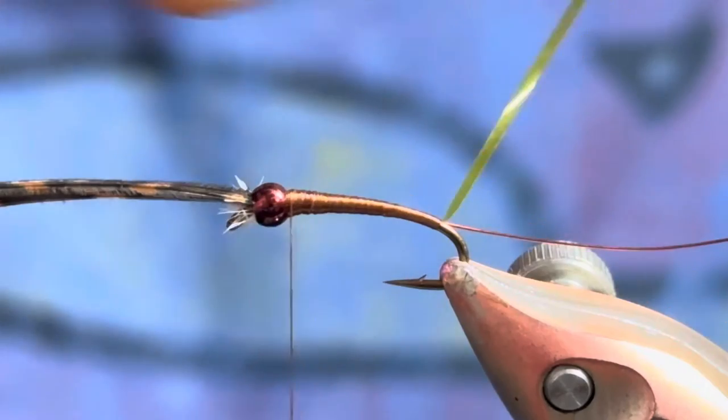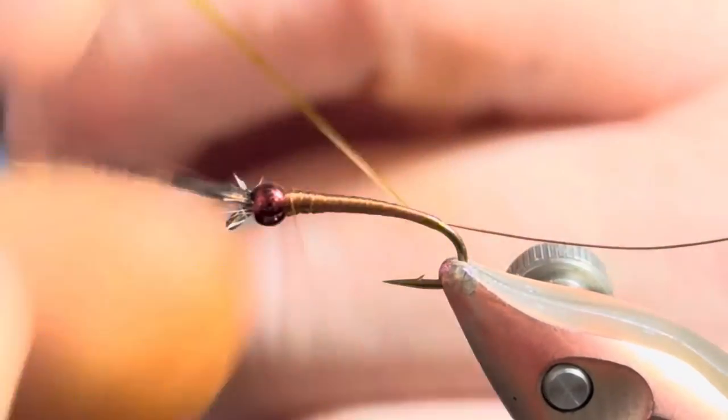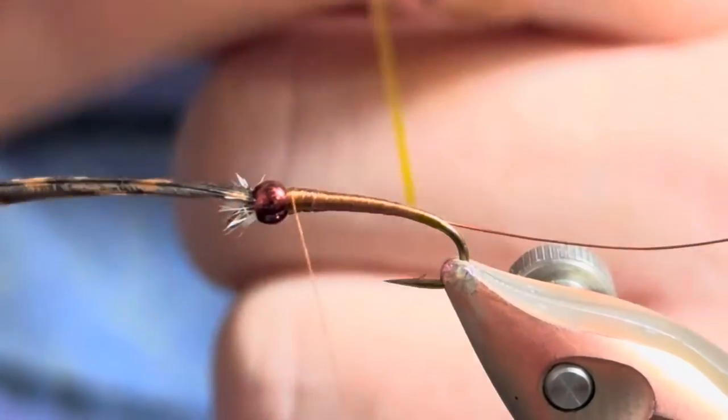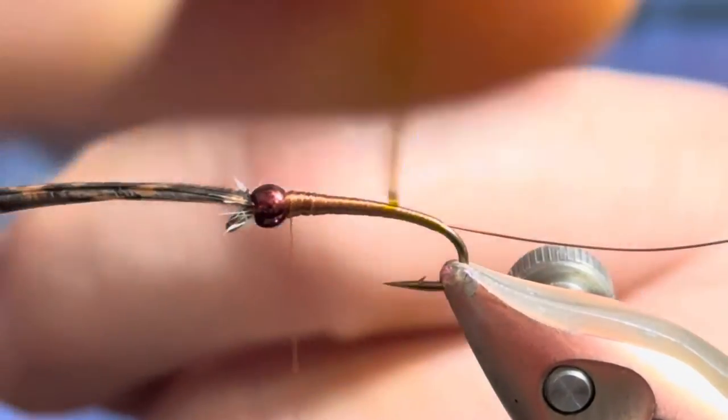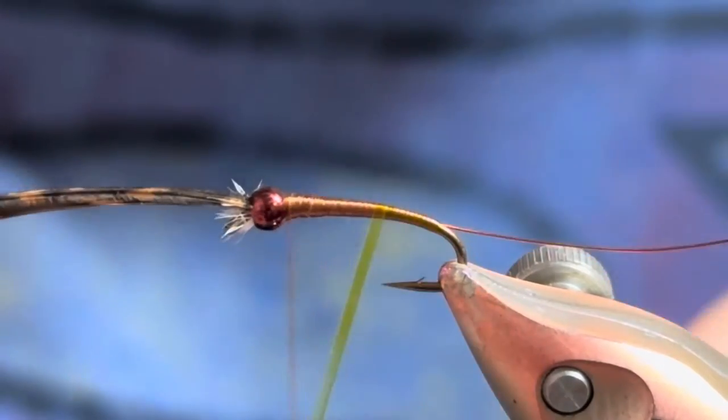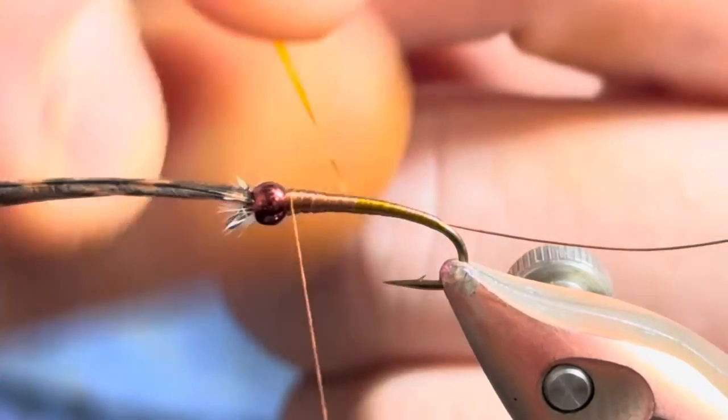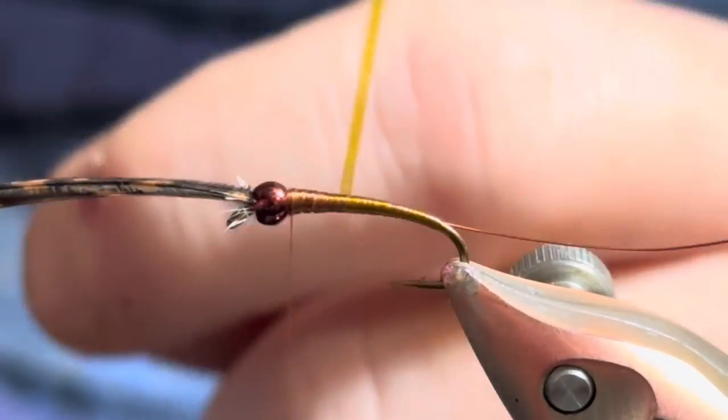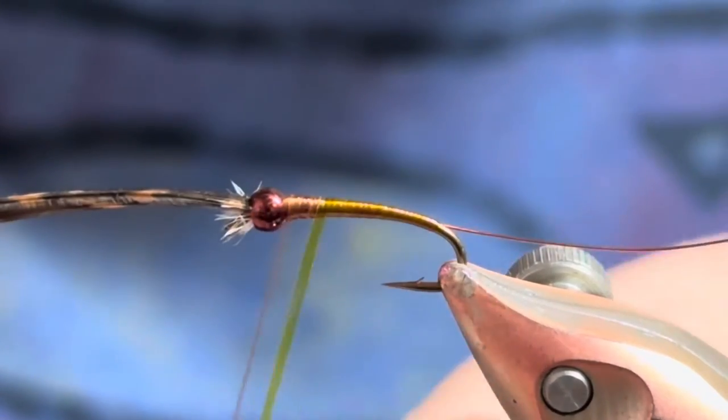If you get into that habit, it just speeds up the tying a little bit because you're not too worried about having to sit here and wait for that thing to unwind. So now we'll just grab our buzzer wrap. You only want a single strand of this, and you don't want to overlap it too much.